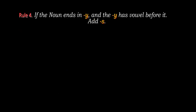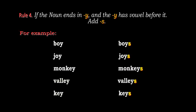Rule number 4: If the noun ends in y and the y has a vowel before it, you just add -s to change it to plural form. For example, boy changes to boys, joy changes to joys, monkey changes to monkeys, valley changes to valleys, key changes to keys. These words also end with y, but before y there is a vowel, so you just add -s to make them plural.